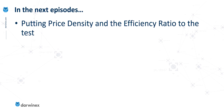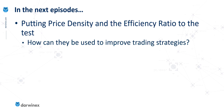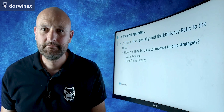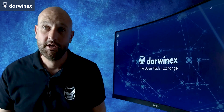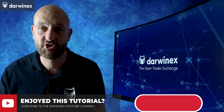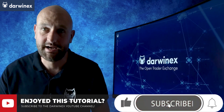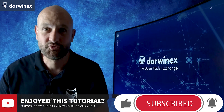Does this mean the efficiency ratio is better than price density at measuring noise? Not necessarily — who's to say that price density isn't giving us a truer picture? The next stage is putting both price density and the efficiency ratio to the test, which I'll be covering in the next few episodes. I'll be looking directly at how the use of these two indicators either improves or otherwise our trading strategies, using the concepts of asset filtering and time frame filtering. If that next episode is already available, you'll find a link top right. If not, please subscribe to the Darwinex channel and you'll get notified when it's available. Until next time, trade safe.